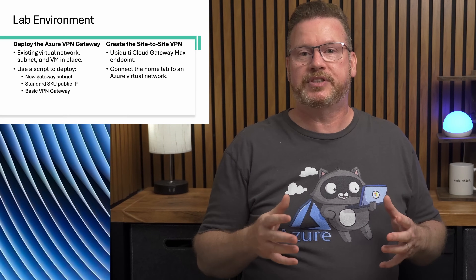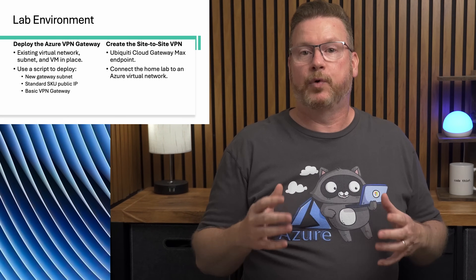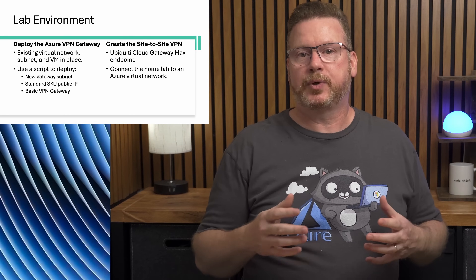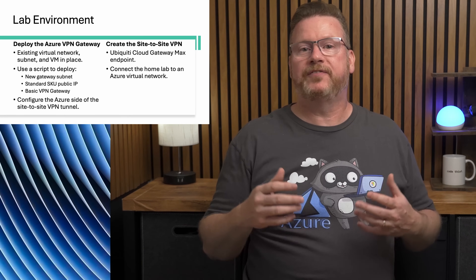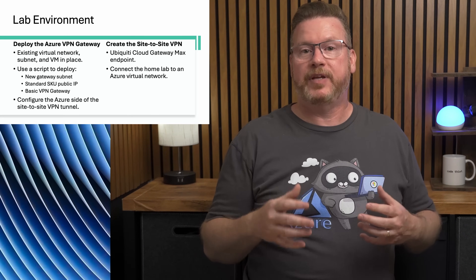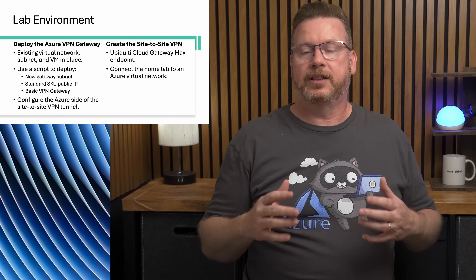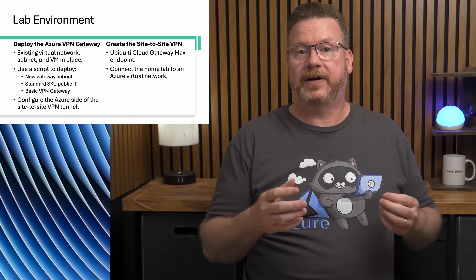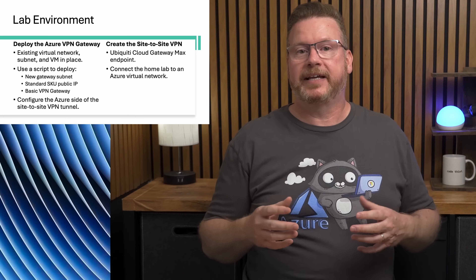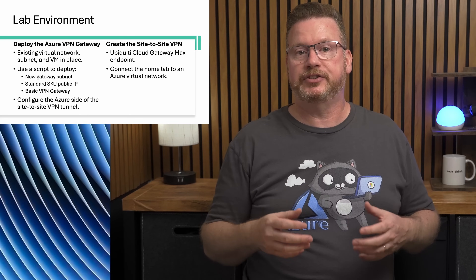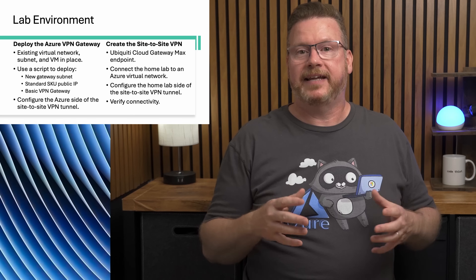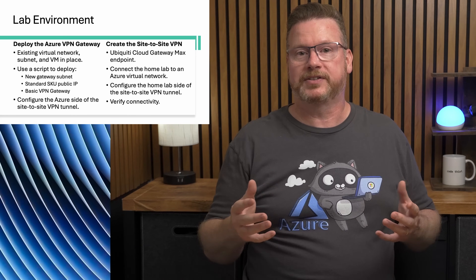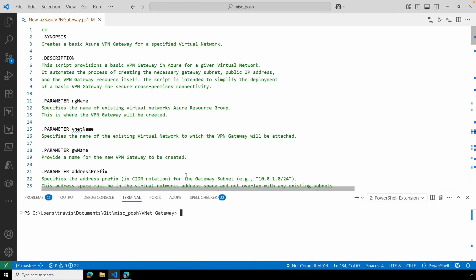Here's what's coming up: we'll use a script to create the new gateway subnet in the existing virtual network, then deploy the basic VPN gateway with a standard public IP. After that we'll configure the local network gateway and VPN connection in Azure. The local network gateway defines the on-prem device we're connecting to; the VPN connection contains the encryption settings used to establish the tunnel. Finally we'll configure the on-prem gateway and test everything.